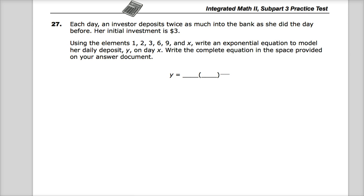Using the elements 1, 2, 3, 6, 9, and x, write an exponential equation to model her daily deposit on day x. So essentially, day 1, day 2, day 3, day 4, day 5. The first day she has 3, so she doubles her investment.